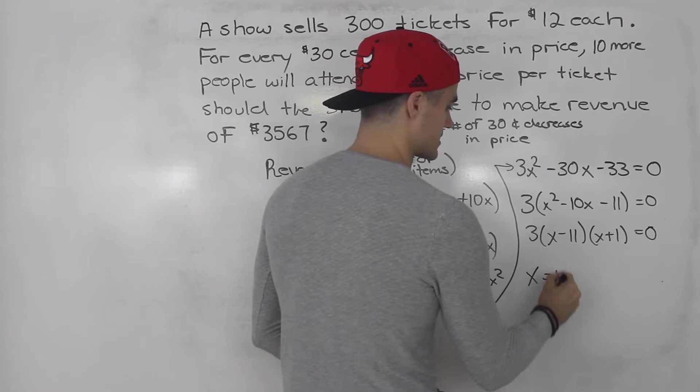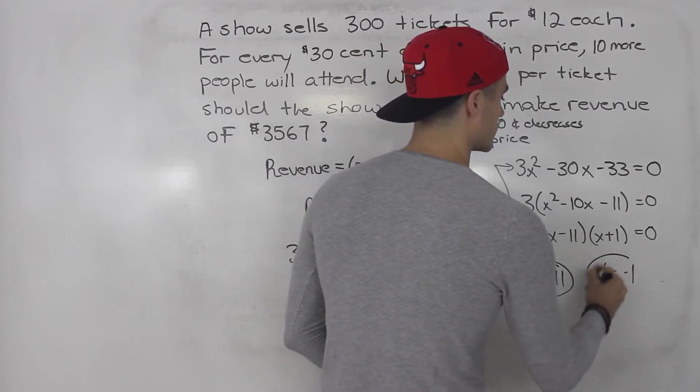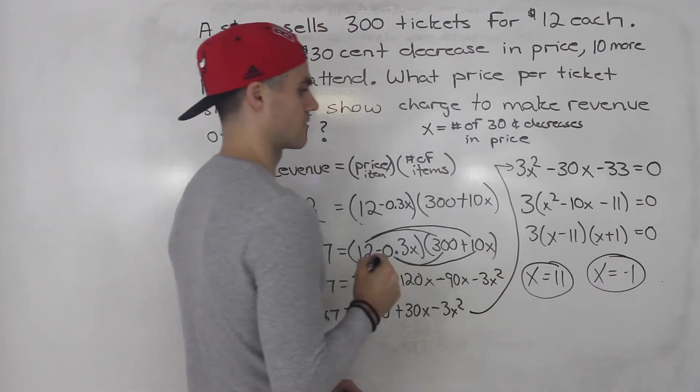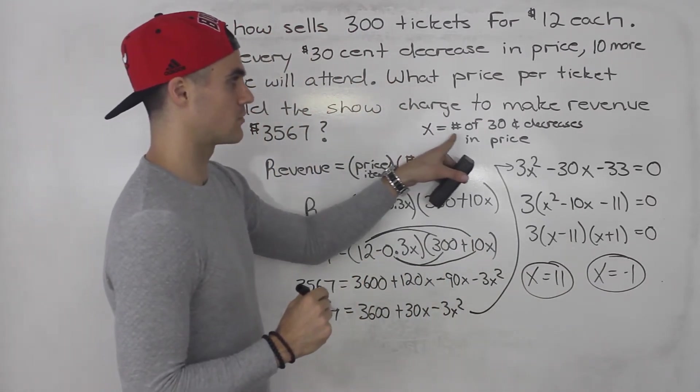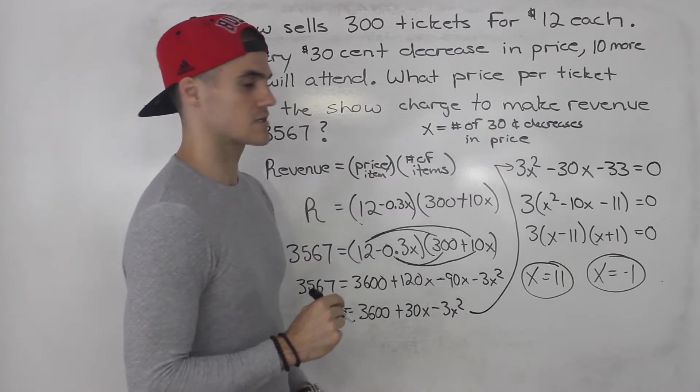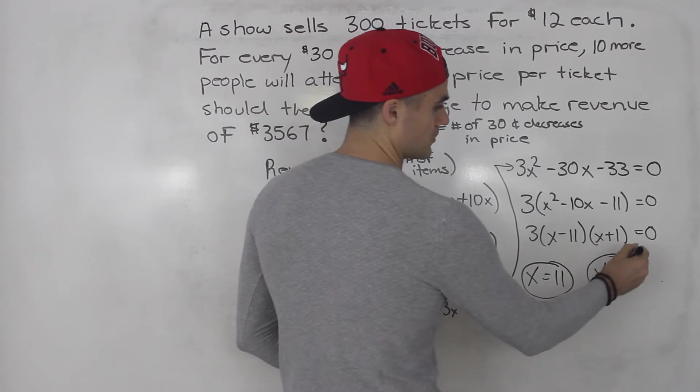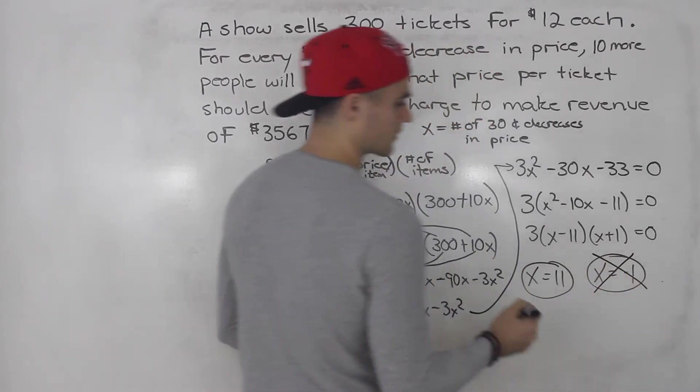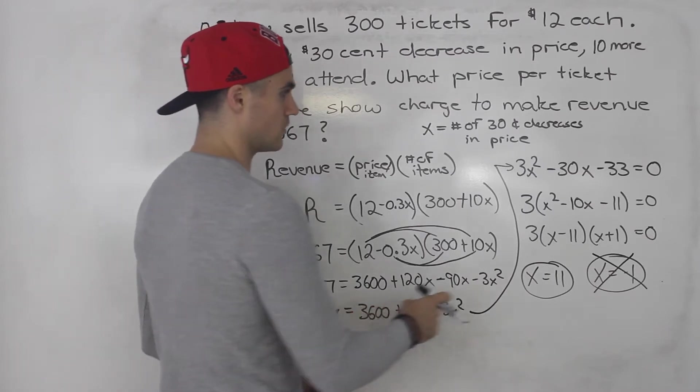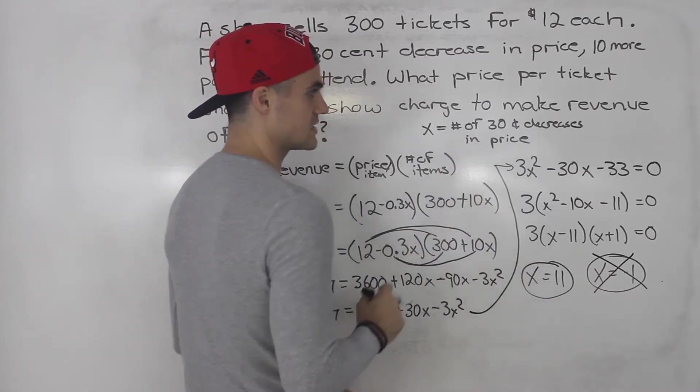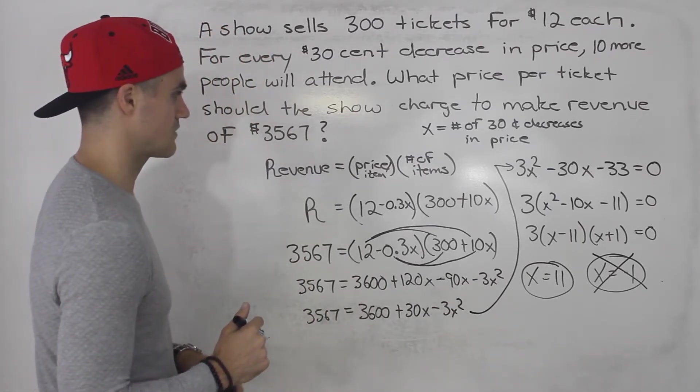Then from here, x is 11 or x is negative 1. And what does x represent? Well, x represents the number of 30 cent decreases in price. So notice this x value negative 1 we would ignore, right? x has to be positive always. So we're going to have 11 thirty cent decreases in price in order to get this revenue of 3,567.